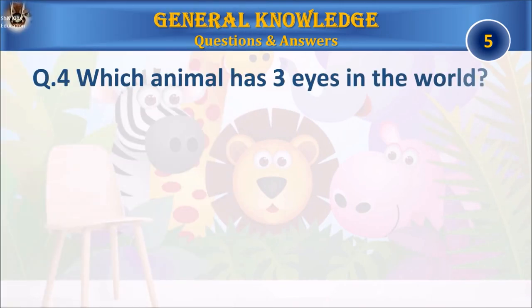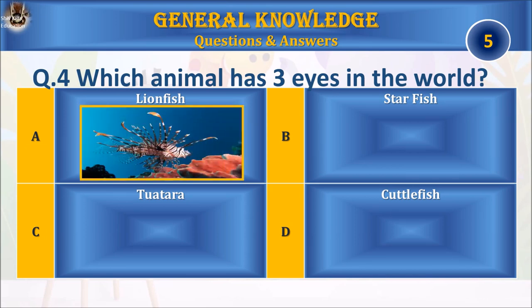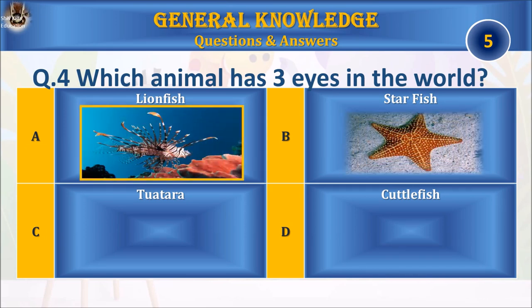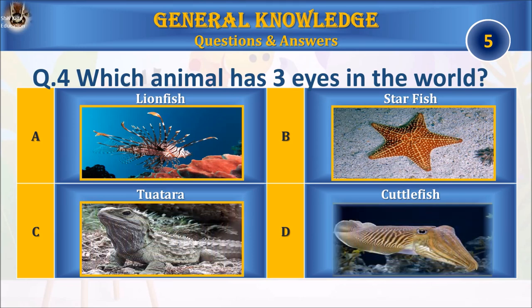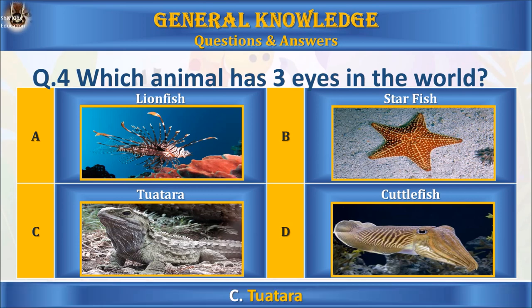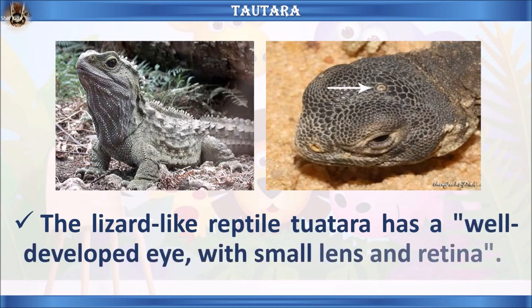Question 4: Which animal has three eyes in the world? A) Lionfish, B) Starfish, C) Tuatara, or D) Cuttlefish. Your time starts. The answer is C) Tuatara. The lizard-like reptile, the tuatara, has a well-developed third eye with a small lens and retina.